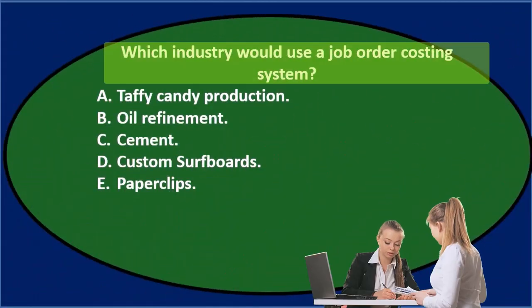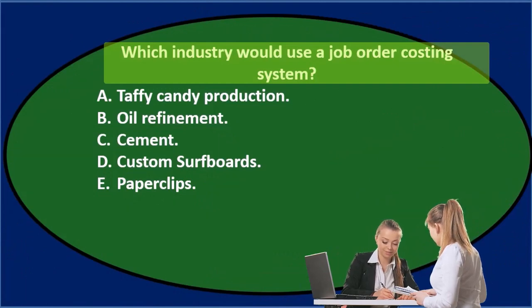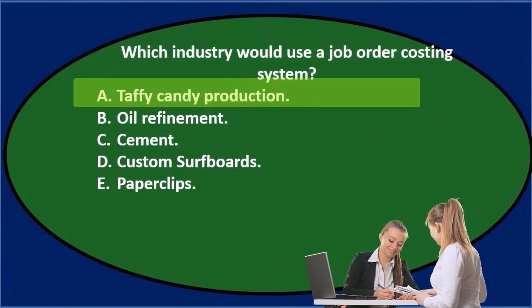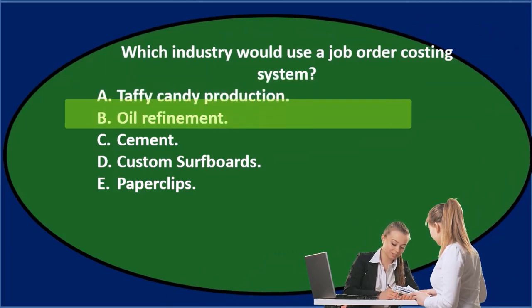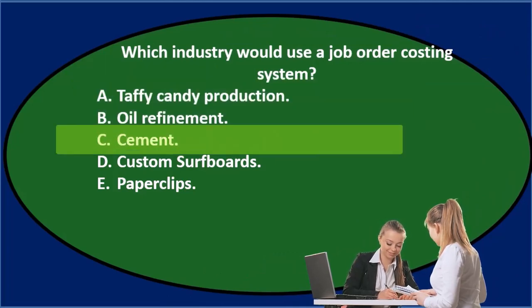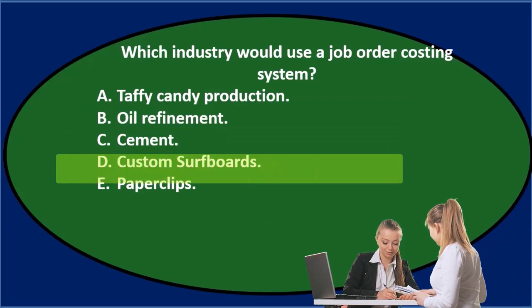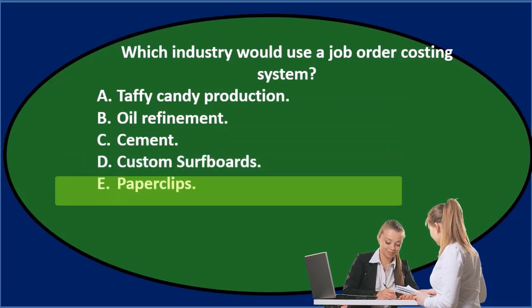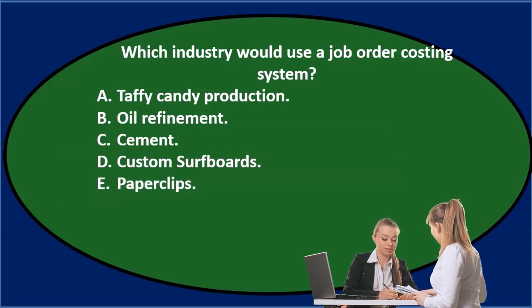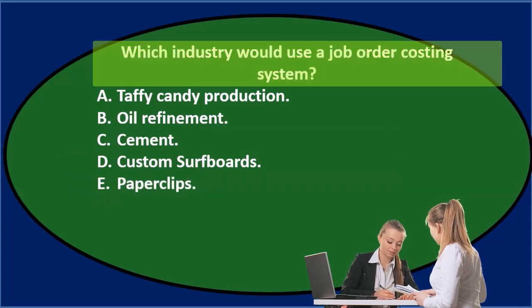When comparing and contrasting, working with a job cost system, we're pretty much always contrasting it to a process cost system. Next question: Which industry would use a job order costing system? A. Taffy candy production. B. Oil refinement. C. Cement. D. Custom surfboards. E. Paperclips. Let's go through this again using the process of elimination.